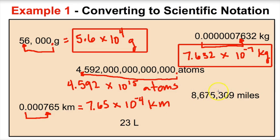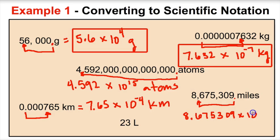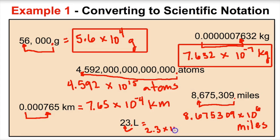Try this one on your own: 8,675,309 miles. We move the decimal between the 8 and the 6 to get 8.675309, times 10 to the 6th. And for 23, we just move the decimal once between the 2 and the 3, getting 2.3 times 10 to the first. That number is bigger than 1 so the exponent is positive. Always remember your unit of measurement.